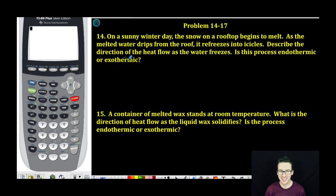As you look at question number 14, it says on a sunny winter day, the snow on a rooftop begins to melt. Wow, such a great story. As the melted water drips from the roof, it refreezes into icicles. Describe the direction of heat flow as the water freezes. Is this process endothermic or exothermic?